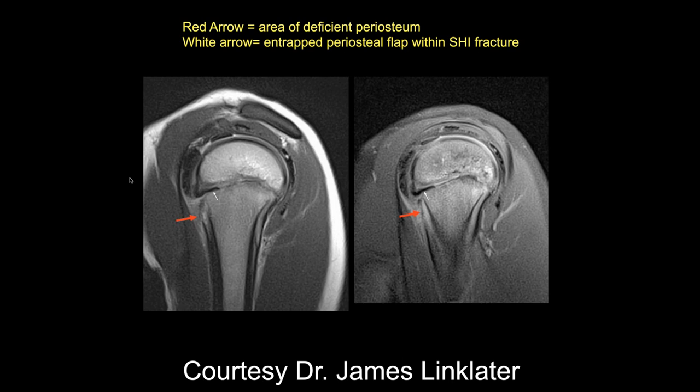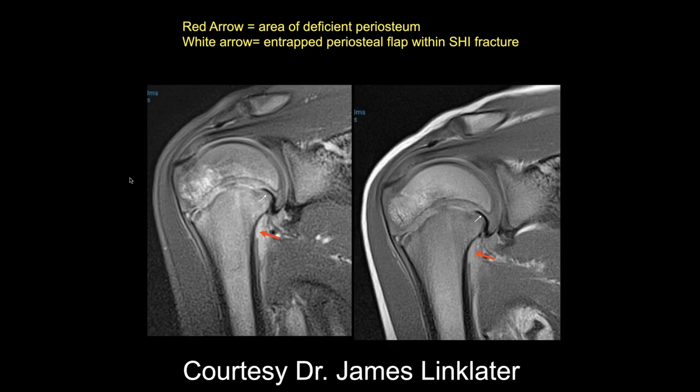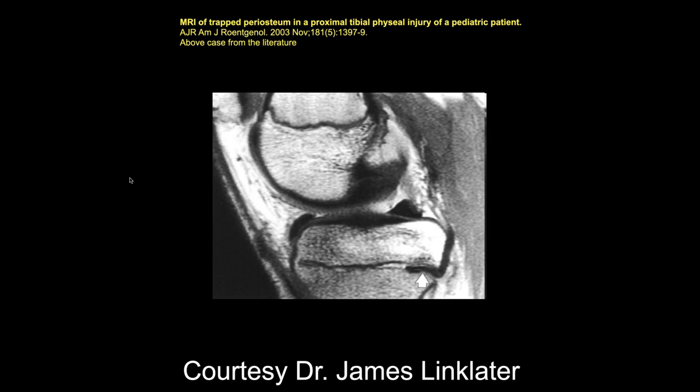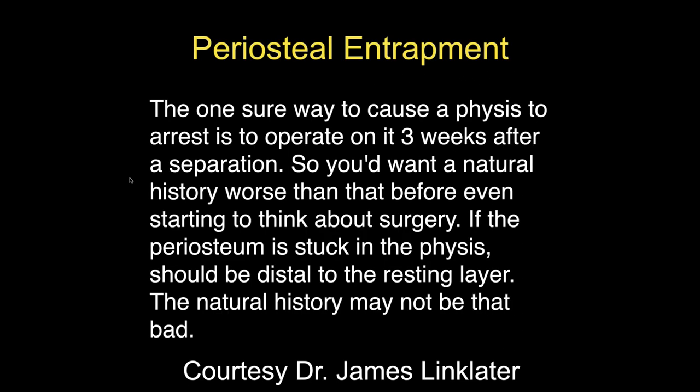Another case: a nine-year-old gymnast, fall from bars. It looks like a Salter-Harris type fracture — an epiphyseal fracture with periosteal stripping — and the periosteum flaps into the growth plate, so it's trapped periosteum. Here's a similar case in the tibia from James Linklater in Denver — a little bit like what we talked about before.